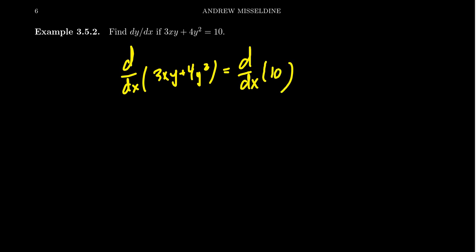Let's actually think about the right-hand side for a moment. We're taking the derivative of 10 with respect to x. Well, since 10 is just a constant function, 10 doesn't change as x changes. This is just going to be 0. And I'm actually going to move that to the left-hand side because I really don't have to do much with it anymore.